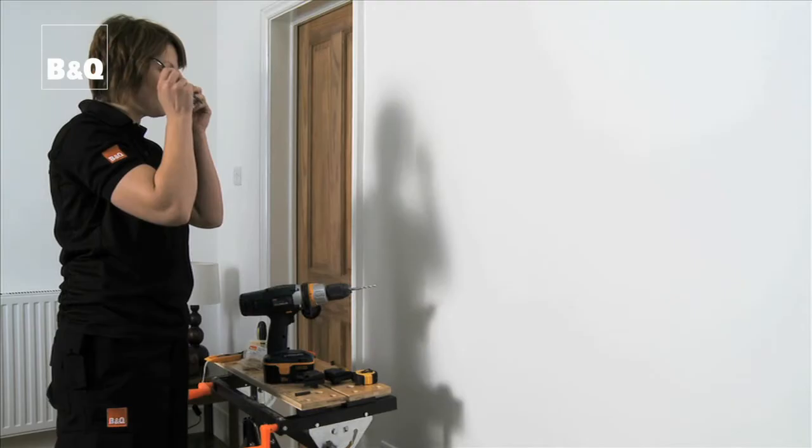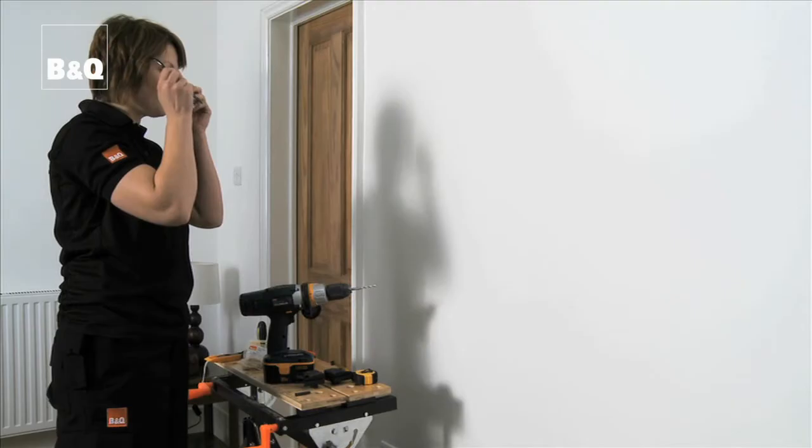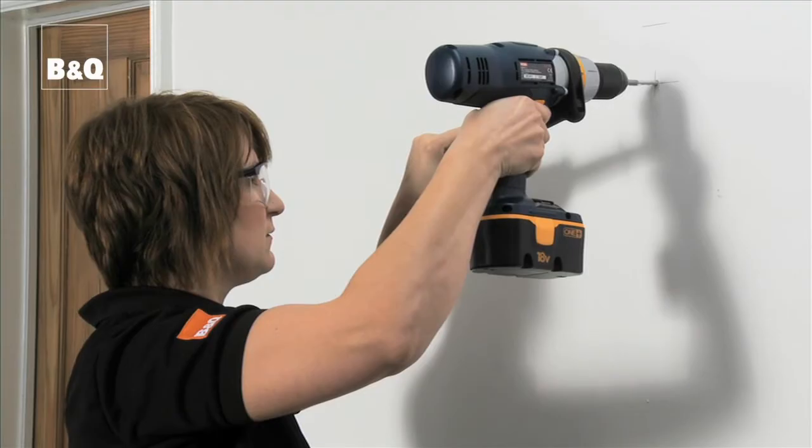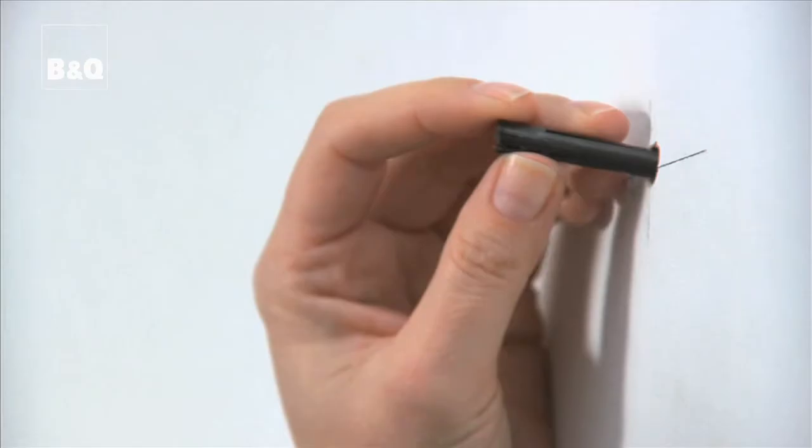Mark the length of your wall plugs on the drill bit with a piece of tape. It's always best to wear goggles for drilling. Using a masonry bit for brick or stone, drill at the marked position using the tape around the bit to gauge how deep to make the hole. You will probably need to switch on the hammer action on the drill.